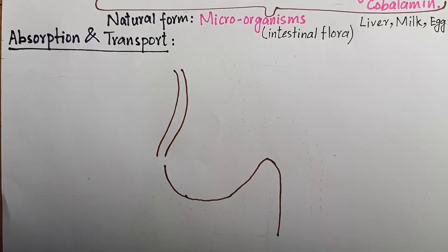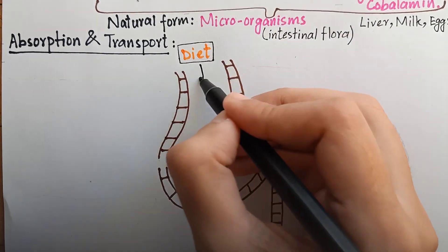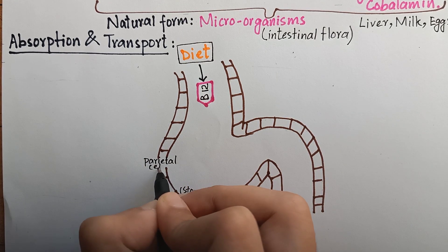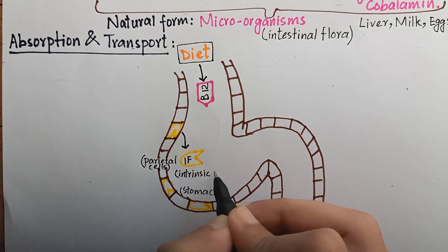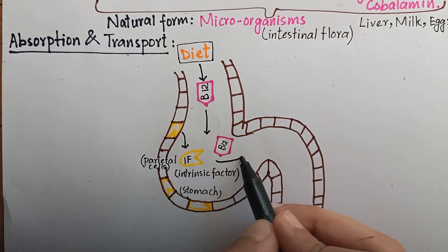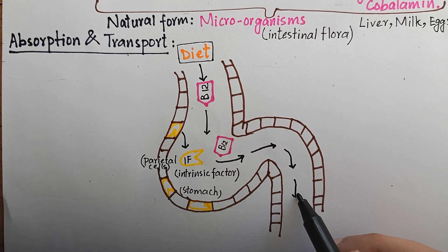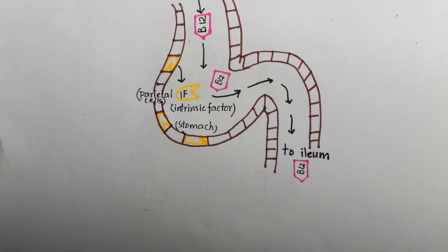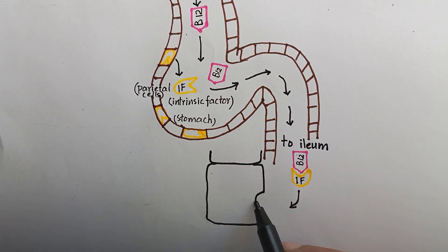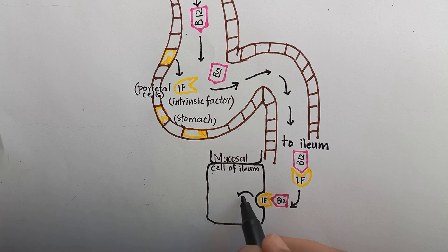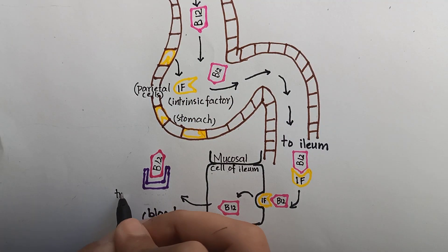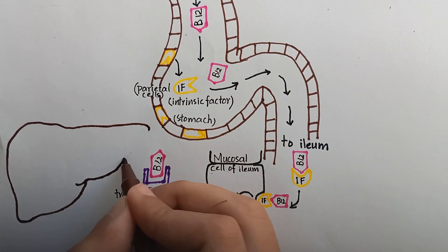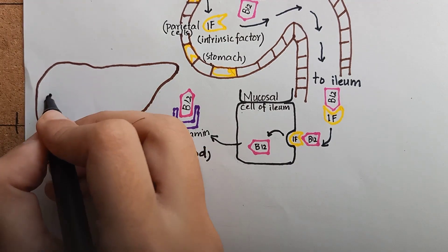Coming to the absorption and transport of B12. Normally, vitamin B12 obtained from diet is dependent on intrinsic factor for its absorption. Intrinsic factor is a glycoprotein synthesized by gastric parietal cells. Vitamin B12 binds to intrinsic factor, and this cobalamin-intrinsic factor complex travels through the intestine. On reaching the ileum, this complex binds to specific receptors on the surface of mucosal cells. The cobalamin is transported into the mucosal cells and subsequently into general circulation. In blood, it binds to specific transport proteins called transcobalamins and is transported to the liver, where it is converted to deoxyadenosylcobalamin and stored in this form.